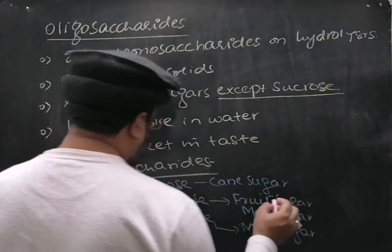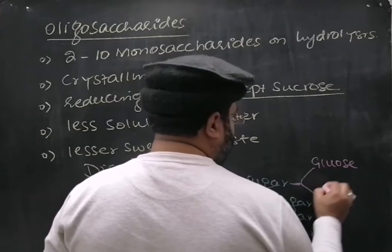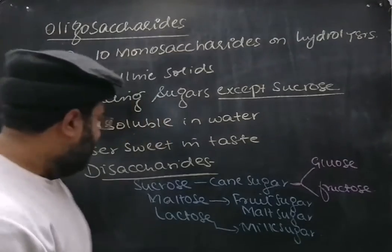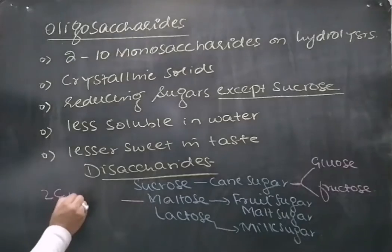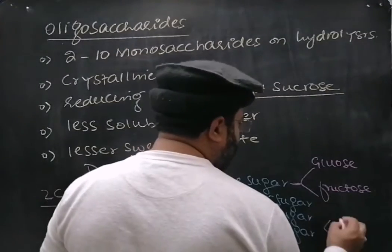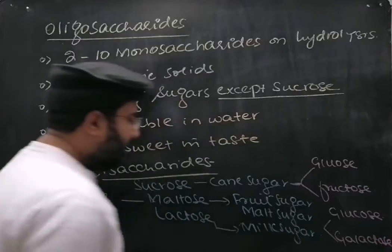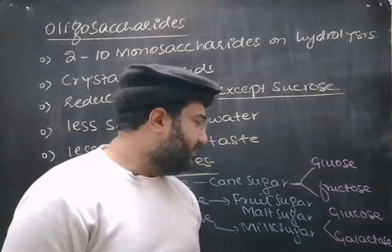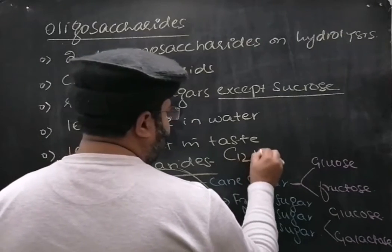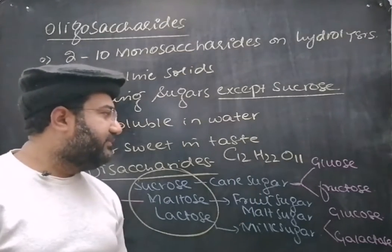Sucrose is formed by the linkage of glucose and fructose, and when sucrose is hydrolyzed, it gives glucose and fructose. Maltose consists of two glucose units, and when hydrolyzed, it again gives two glucose molecules. Lactose is made up of a glucose molecule and a galactose molecule, and on hydrolysis gives glucose and galactose. The molecular formula of all three disaccharides is C₁₂H₂₂O₁₁.